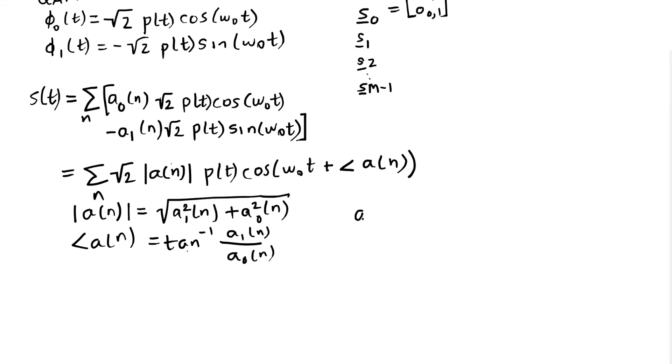An is really a complex number where An is equal to A1 of n plus J A0 of n, and this form we've referred to as complex baseband. This form would have the same representation where the magnitude of the complex number A complex baseband of n would be this, and the angle would be this.